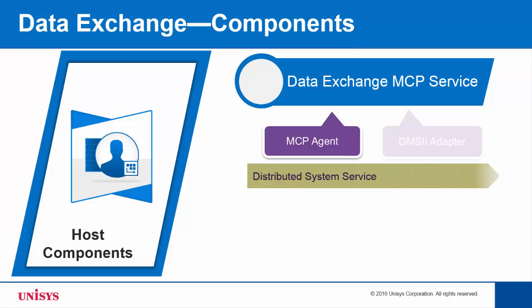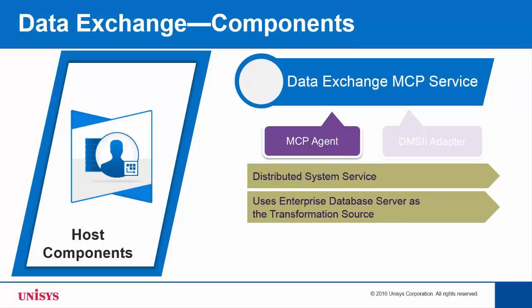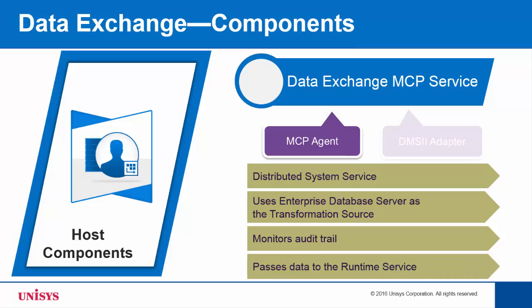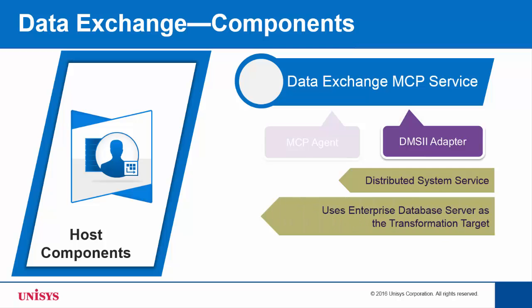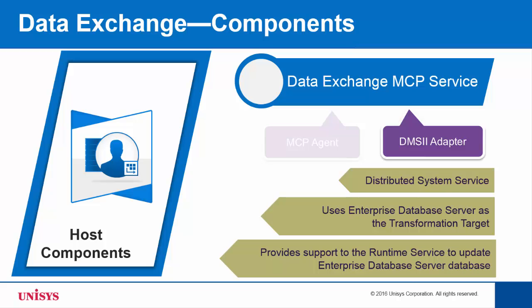MCP Agent is a distributed system service running on the MCP Server, used when Enterprise Database Server is used as the transformation source. DMS2 Adapter is also a distributed system service running on the MCP Server, used when Enterprise Database Server is used as the transformation target. The adapter provides support to the runtime service to update the target Enterprise Database Server databases.